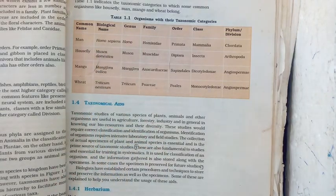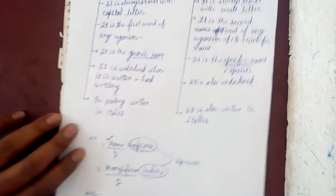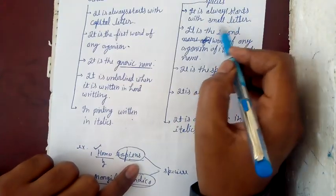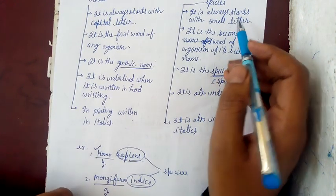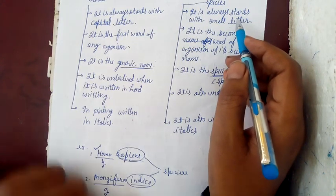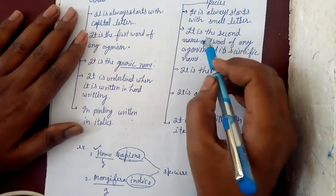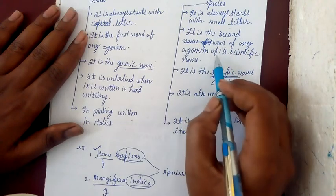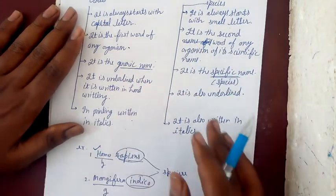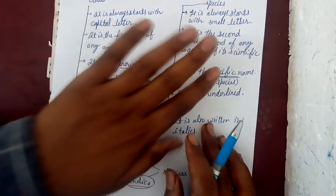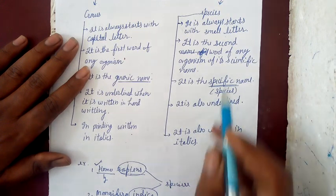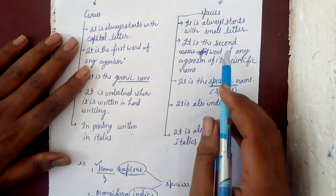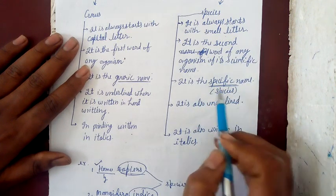The genus always starts with a capital letter. It is the second word of any organism in its scientific name - that is species or specific epithet. It is also called the specific name.